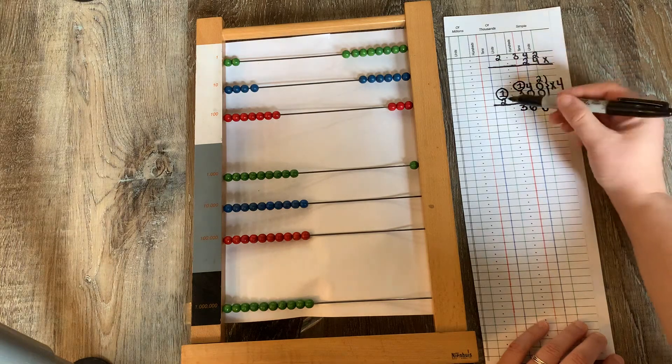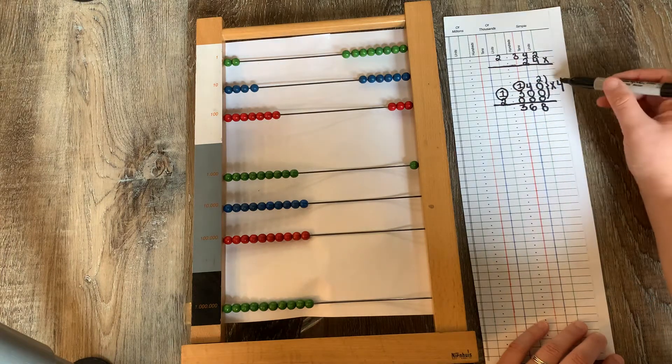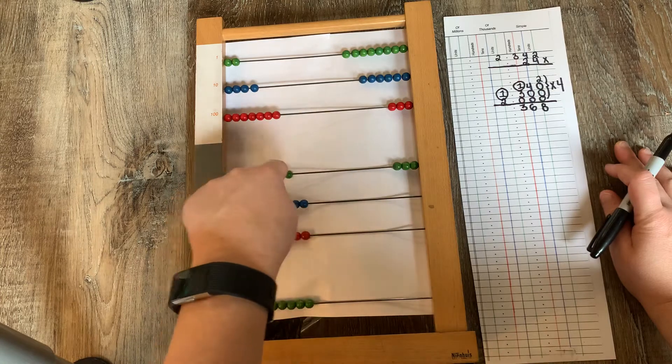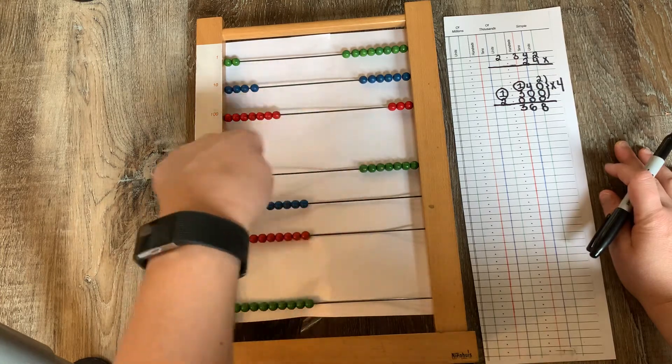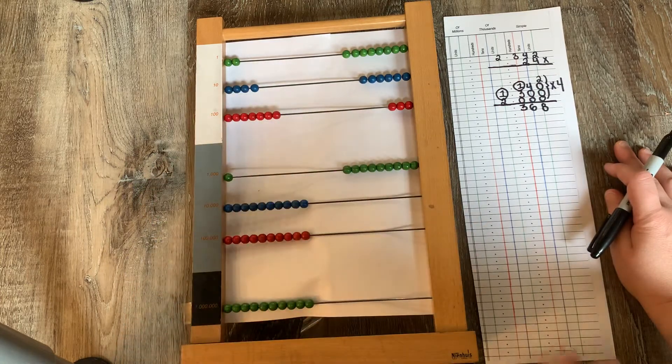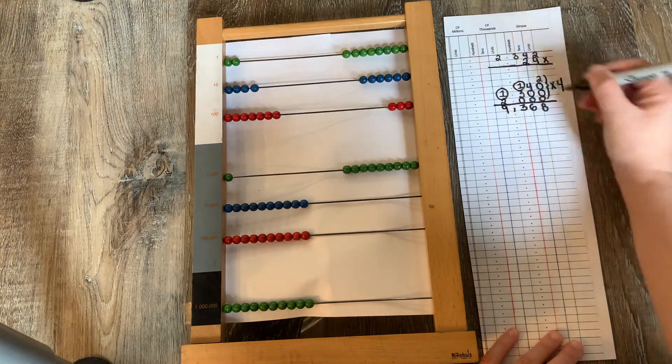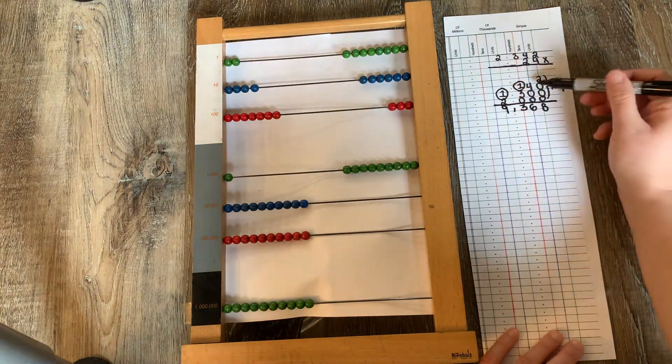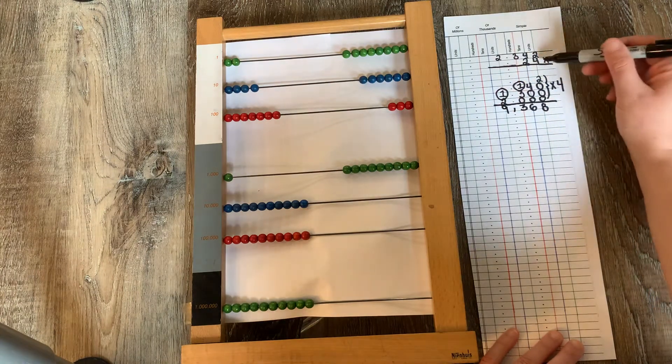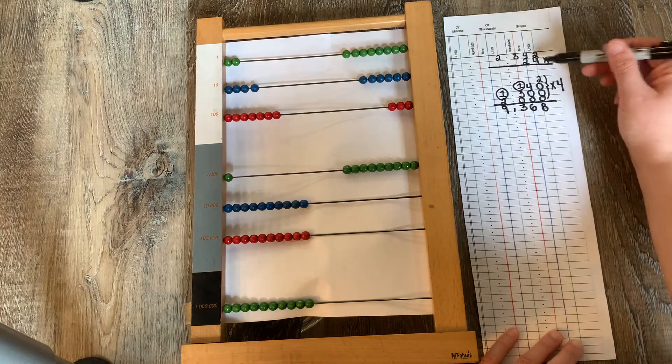Now I need to take 2,000 four times. One time, two times, three times, four times. What do I have? Yes, 9,000. So now I've decomposed my multiplicand and multiplied it by my units, four.